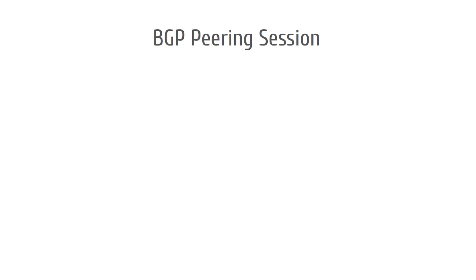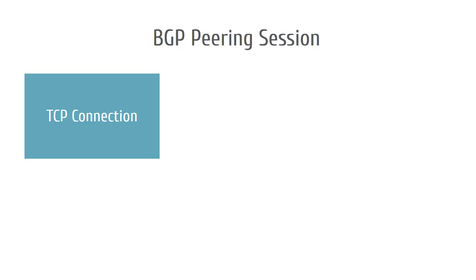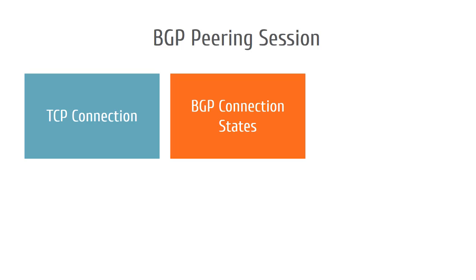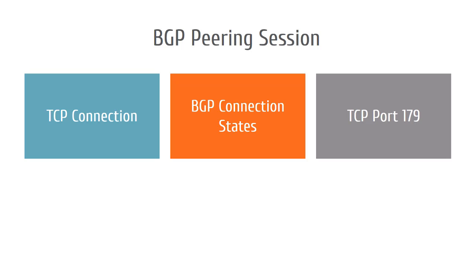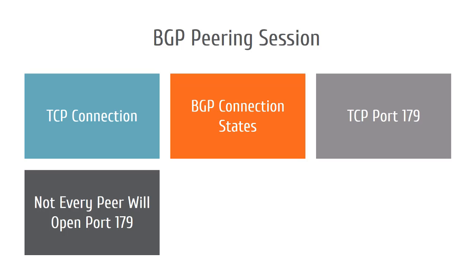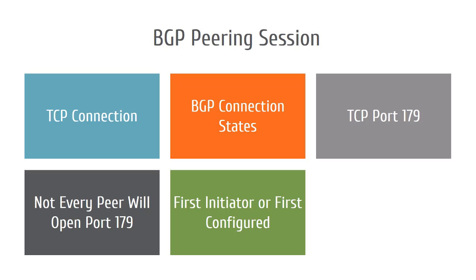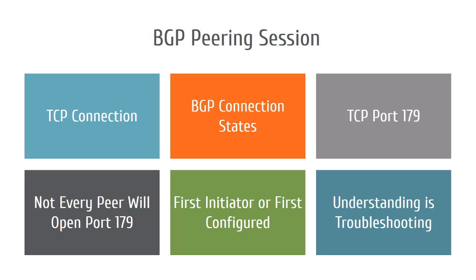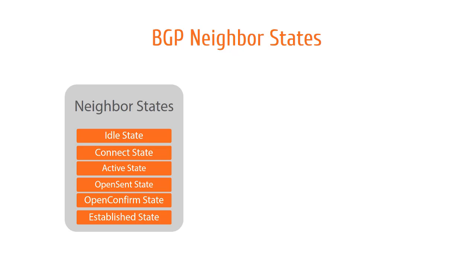BGP peering sessions. As we discussed earlier, BGP peering requires manual configuration and there is no auto-discovery of neighbors possible. It starts with the TCP connection first, and once it's established it will undergo the BGP connection states. BGP will use TCP port 179 to connect. This will be the destination port number for the peers to connect and establish the session. Not every BGP peer will open this port, so if you have two routers and BGP is configured on both, the router that initiated the BGP connection or the router that was configured first will listen on port 179. Understanding this will help you in troubleshooting BGP issues. TCP provides a full duplex, connection-oriented, reliable byte stream service to BGP. BGP considers a connection between two peers to be idle until a TCP connection is established between them. With the TCP connection established, the endpoints are assured of a reliable connection.